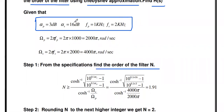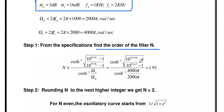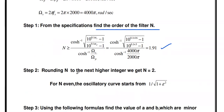Substituting the values: alpha_s = 16, alpha_p = 3, omega_s / omega_p = 4000π / 2000π = 2. Using a calculator, n ≥ 1.91. The second step is to round this to the next higher integer, giving n = 2. So our filter is a second-order Chebyshev filter.